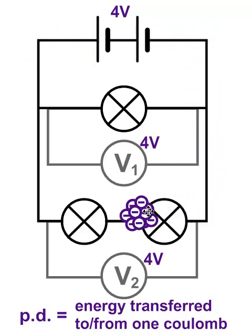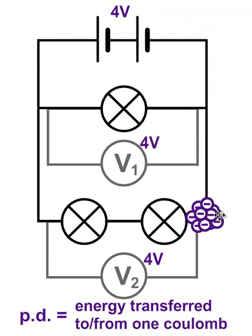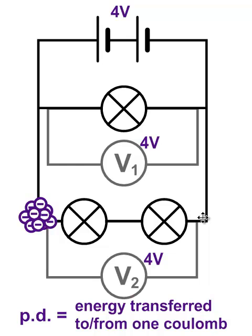No matter what branch the electrons go through, they always end up giving all their energy to that branch. So the potential difference across each branch in a parallel circuit is always the same as the potential difference of the supply. We could add another branch into this circuit and all the energy would be given up within that branch before the electrons return to the cells. The potential difference across each branch in a parallel circuit is the same because all the energy is given up within that branch. You might be wondering how the energy is divided in the lower branch between two bulbs — that is the subject of another video on potential difference across components in series, so have a look at that.